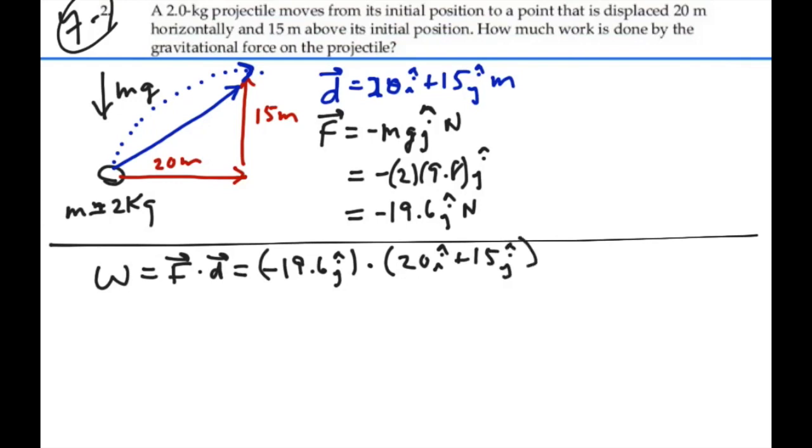A j dotted with a 20i is going to be 0. A j dotted with a j is going to be 1. So this is going to be negative 19.6 times 15 times 1 j dot j. So that will give us 19.6 times 15, negative 294 newton meters or joules.